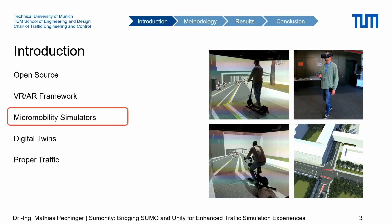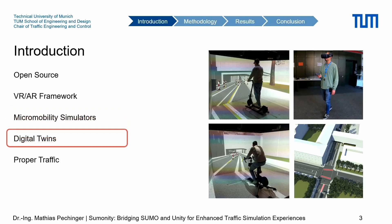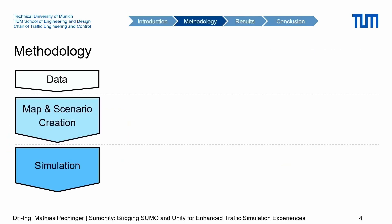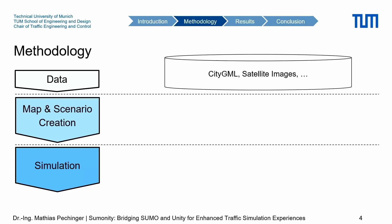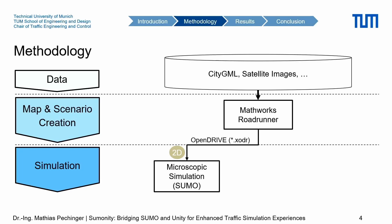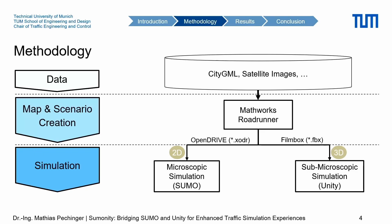If we write a paper or do simulation, we can say we have a properly defined demand setup with proper traffic flow. The methodology of the system uses CityGML data — different levels of detail for buildings — and satellite images. We use MathWorks Roadrunner for map and scenario creation, then extract the microscopic simulation in SUMO using the OpenDrive export from MathWorks, and also export the Unity world as a 3D scene so they are both aligned. In between, there is SUMONITY as our interface.